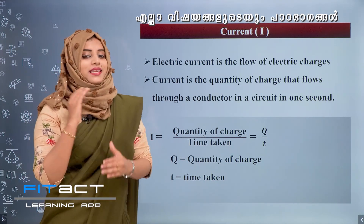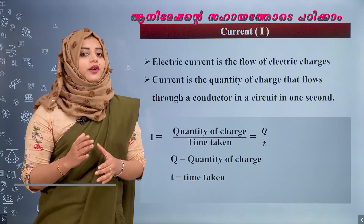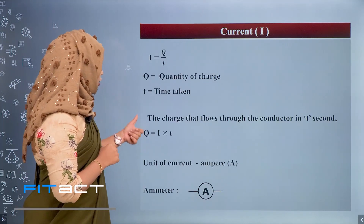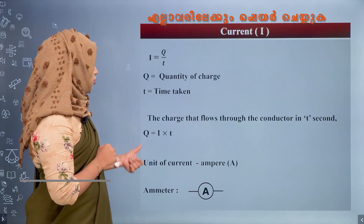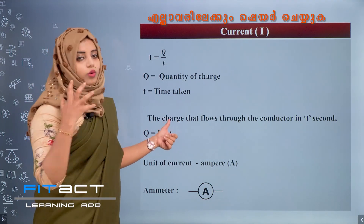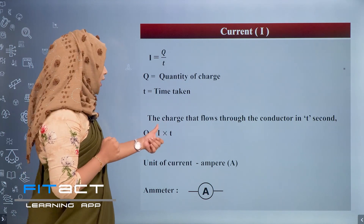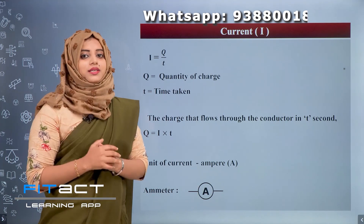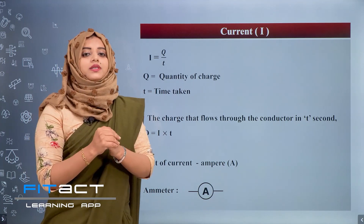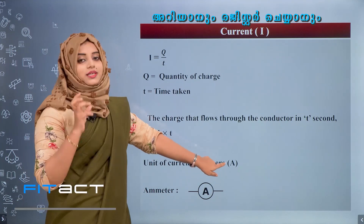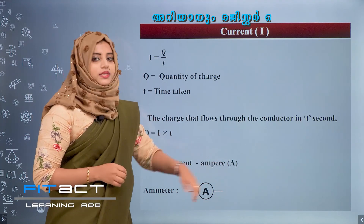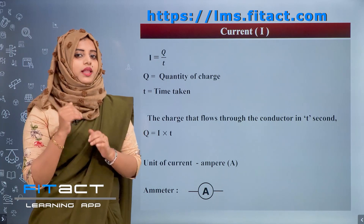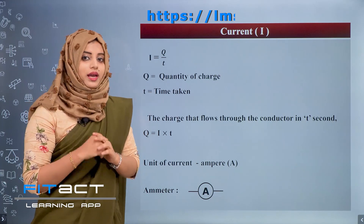The total charge Q is equal to I into T Coulomb. That is, current in Amperes multiplied by time taken. The unit of current is Coulomb per second, or Ampere, denoted by the letter capital A.